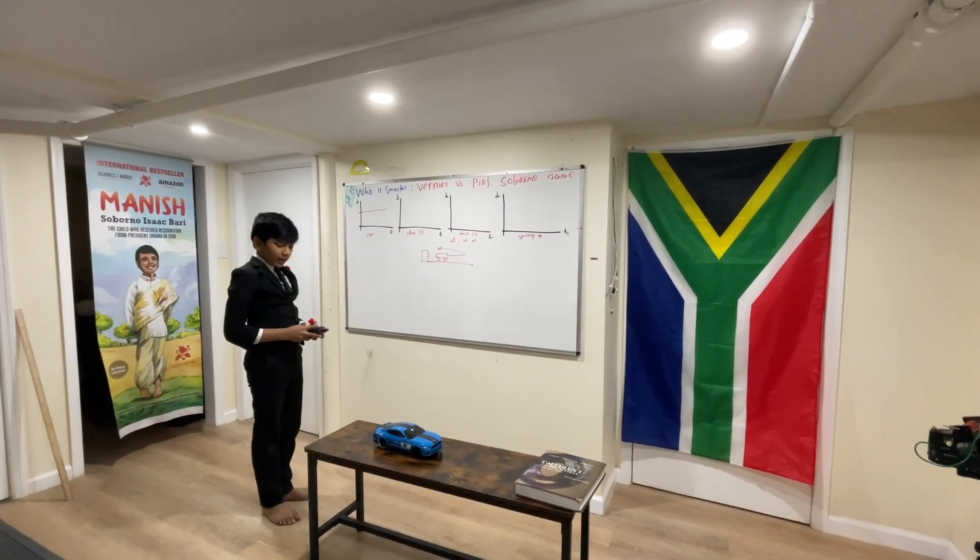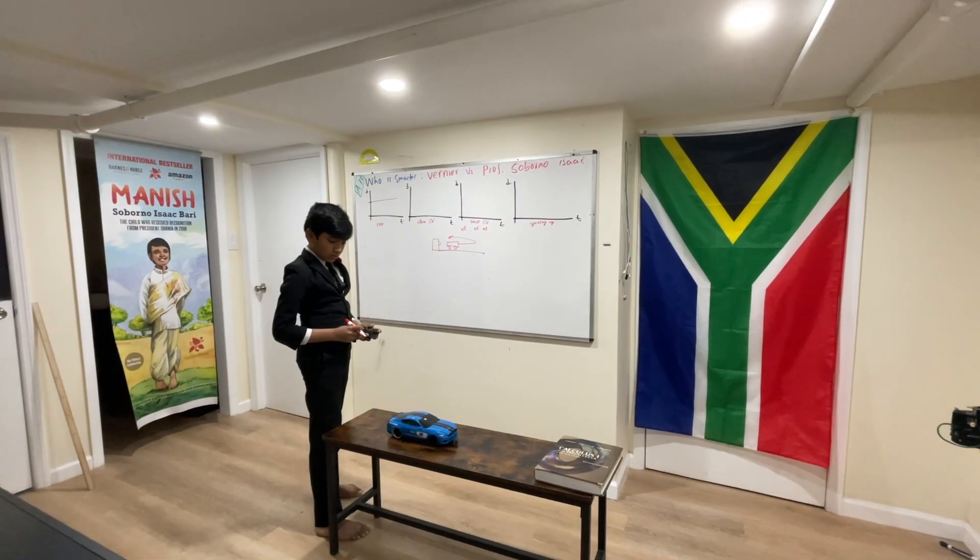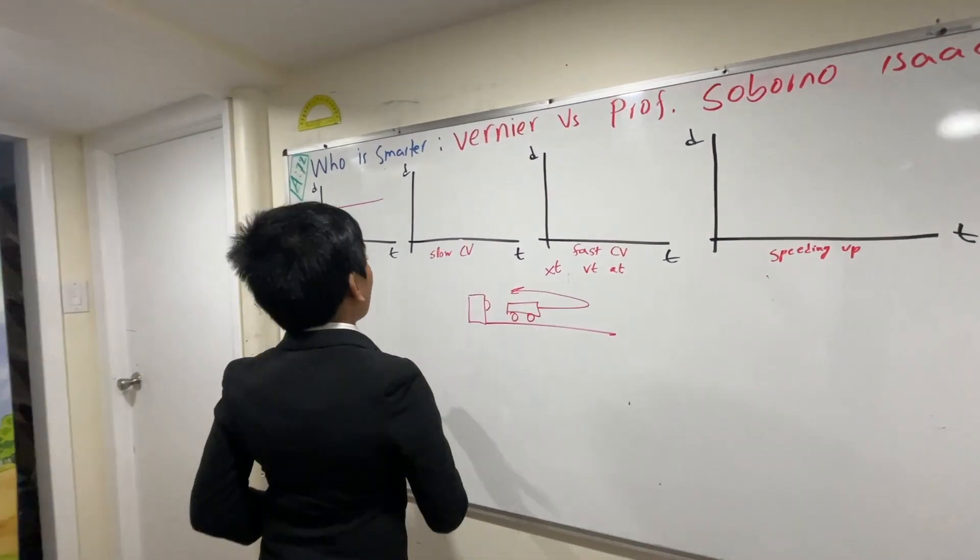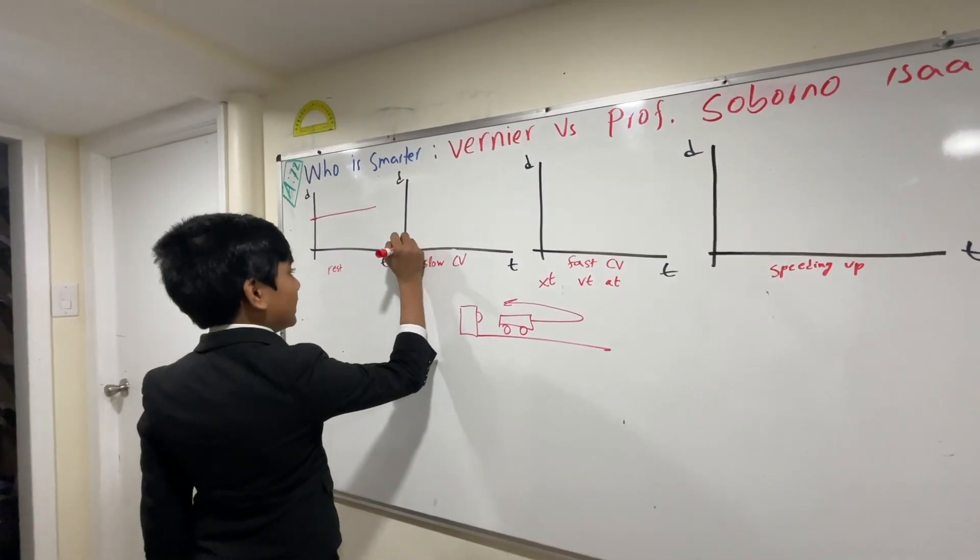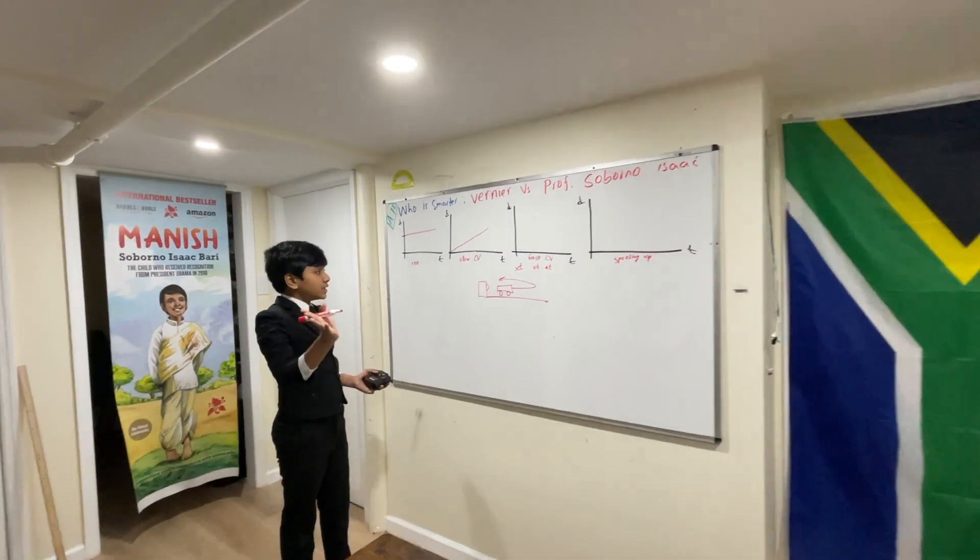Alright, now let's put it at a slow, constant velocity, so I can get this car to move slow. Alright, so that was pretty slow, constant velocity,